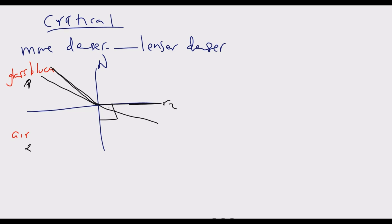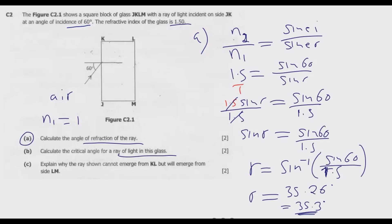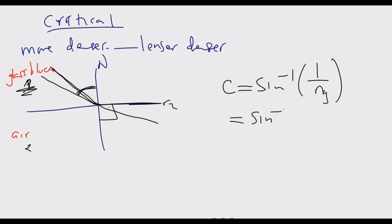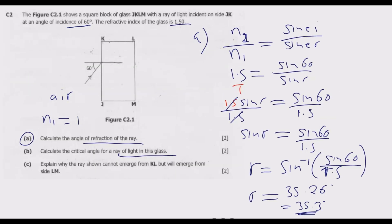The critical angle is given by the formula: critical angle equals inverse sine of 1 over the refractive index of the denser medium — in this case, the glass. We are told the refractive index of the glass is 1.5, so we substitute: critical angle equals inverse sine of 1 over 1.5. Using our calculator the same way we did for the angle of refraction, we find 41.81 degrees.